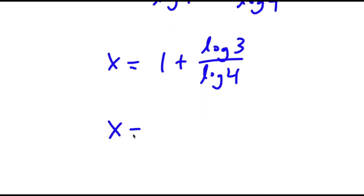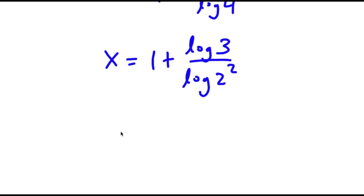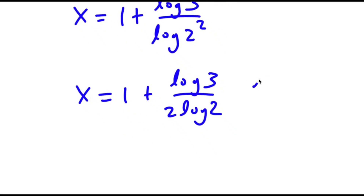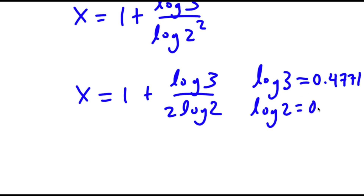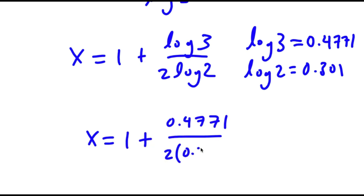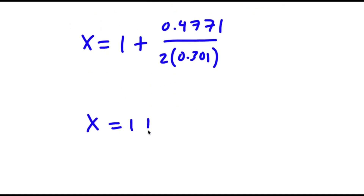Now log 4 equals log 2 squared, so I have x equals 1 plus log 3 over log 2 squared. And log 2 squared is the same thing as 2 times log 2. Log 3 is equal to 0.4771 and log 2 is equal to 0.301. So x equals 1 plus 0.4771 over 2 times 0.301, which equals 1 plus 0.7925, giving x equals 1.7925.